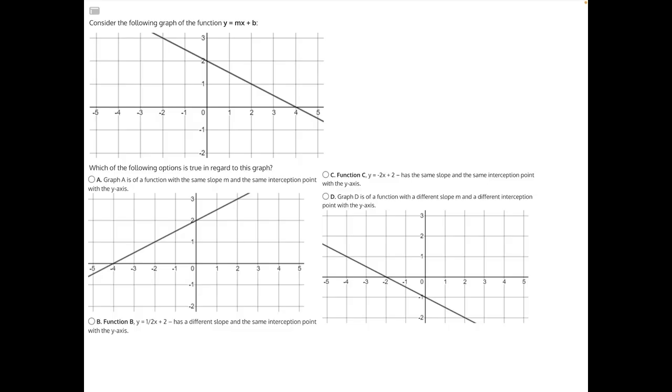Graph A is a function with the same slope and the same interception point with the y-axis. The interception points are the same between these two graphs - they're both at y equals positive 2. But the slopes are different. Looking from left to right, this is an upward or positive slope, and this is a downward or negative slope. So they do not have the same slope, making answer choice A incorrect.